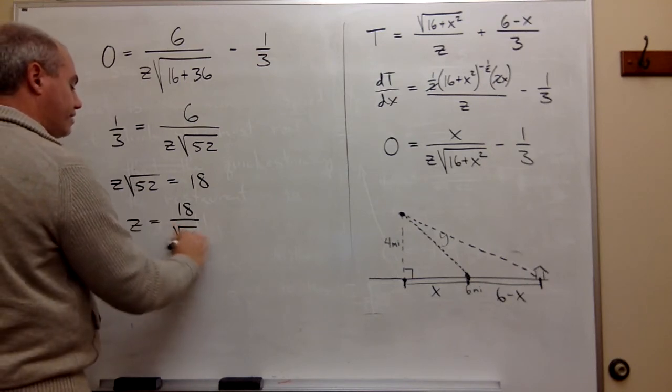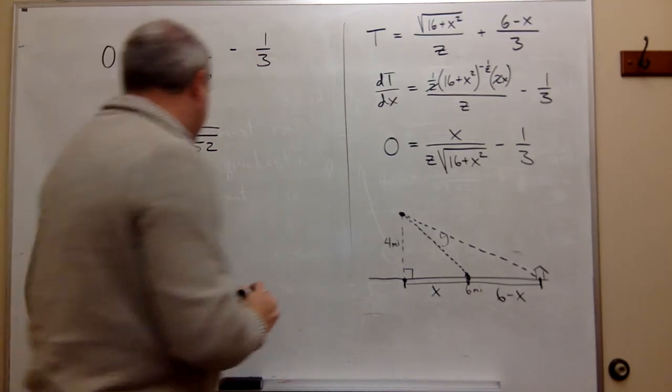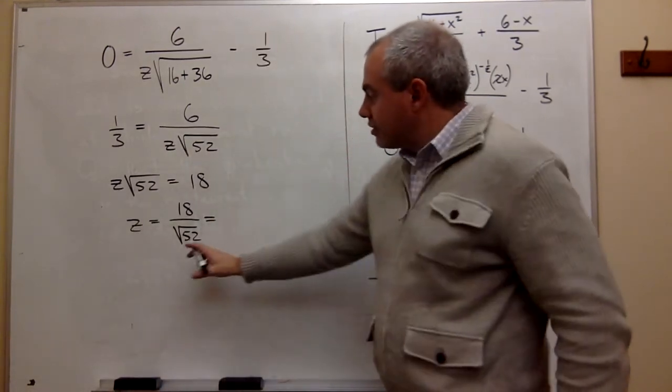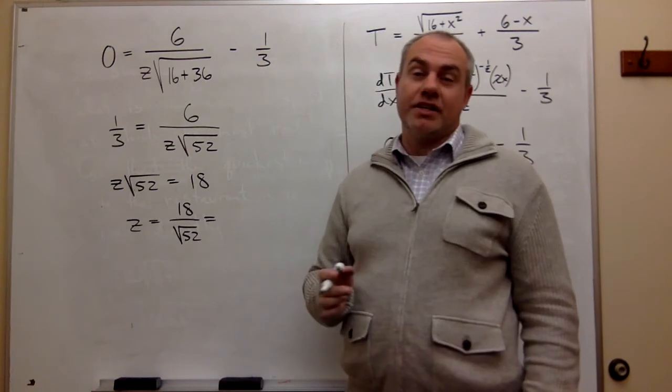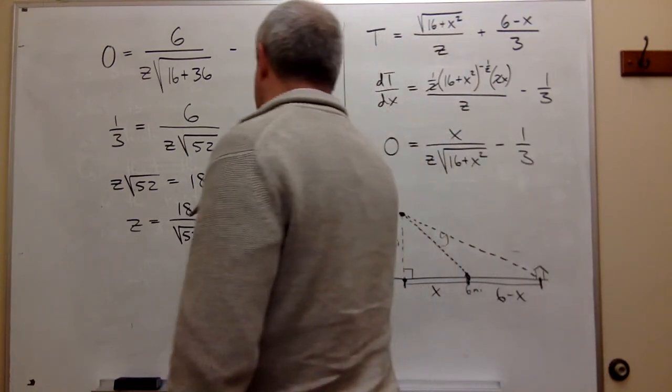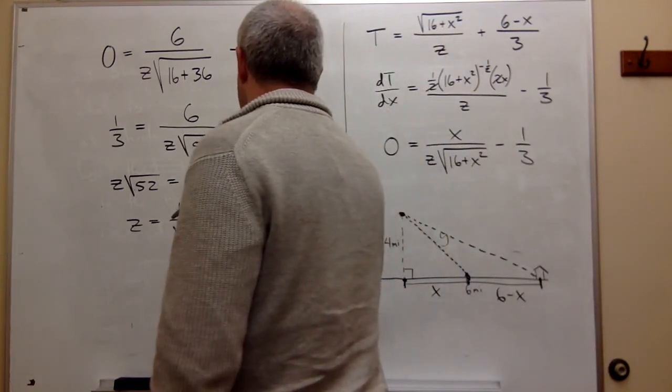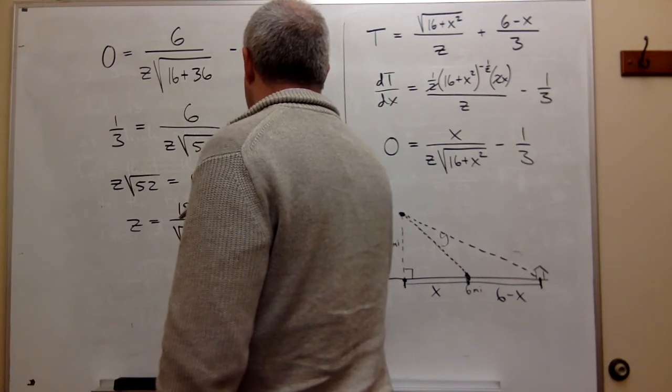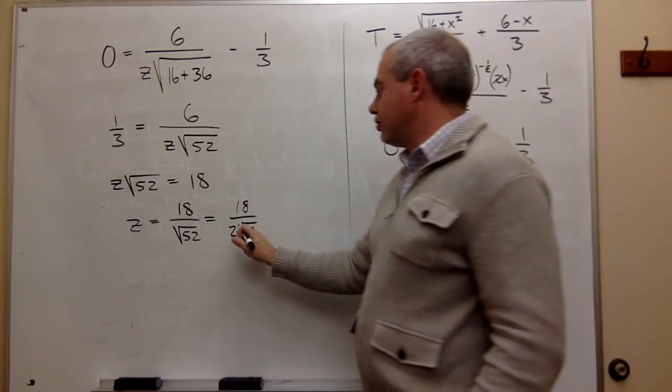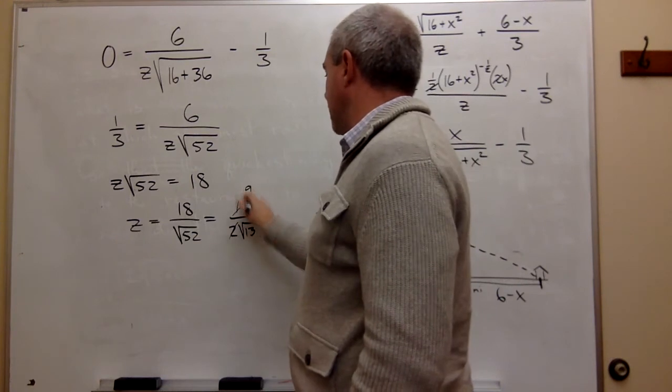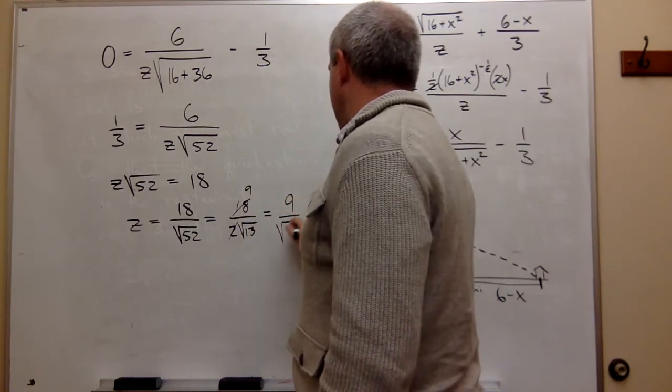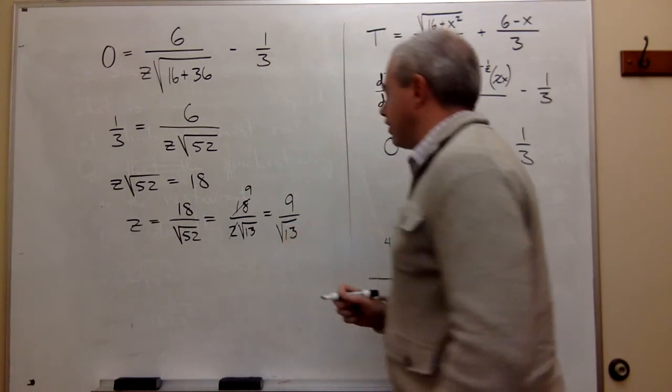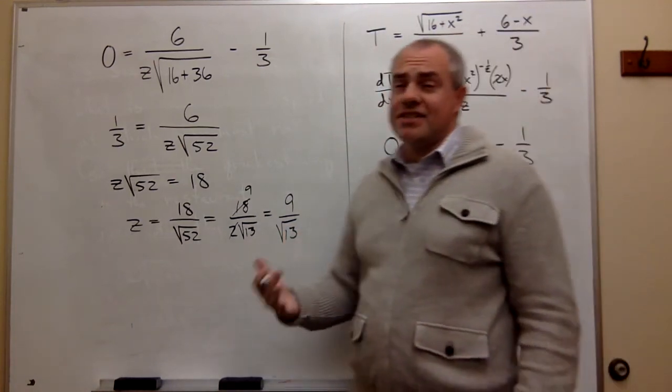Or that z is equal to 18 over the square root of 52, which we could simplify this just a little bit. Square root of 52—52 is 13 times 4—so this is 18 over 2√13. It's the same thing, and the 2 and the 18 would cancel and give me a 9 on top, so I could just write this as 9 over the square root of 13.